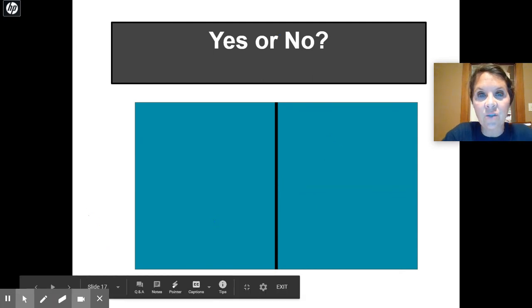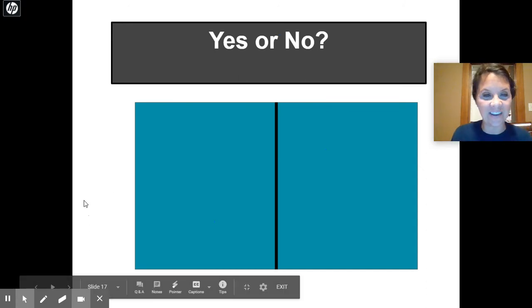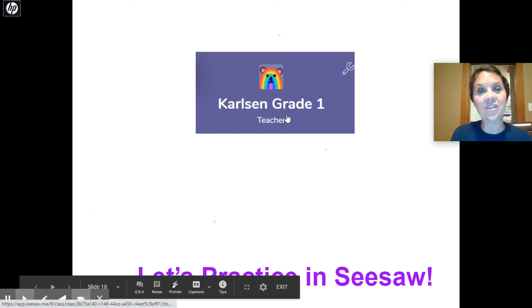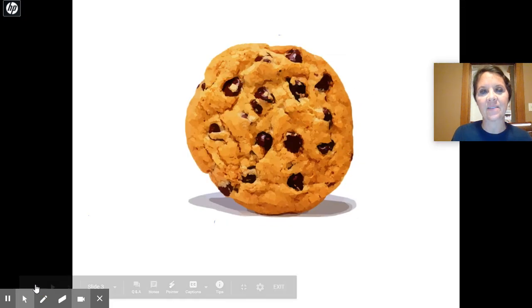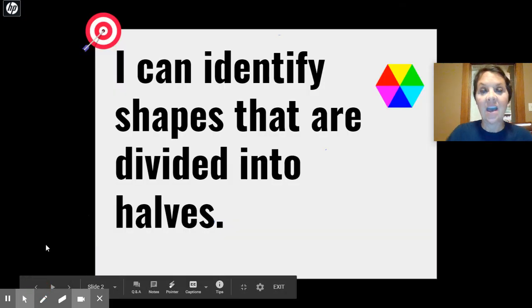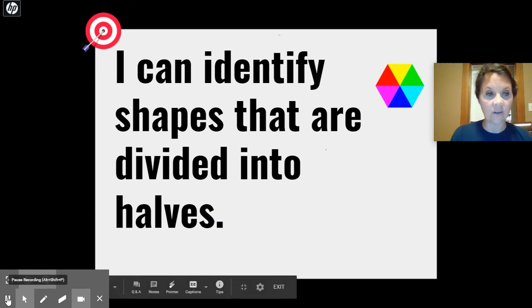Okay, what about this one? Is this one divided equally into halves? Yes or no? Yes, very good. So now you're going to get a chance to practice on your own with our learning target that says, I can identify shapes that are divided into halves. So you're going to be looking at a group of shapes and you're going to have to take the ones out. You're going to actually sort them out into the ones that are divided into halves and the ones that are not. So you're going to be naming those ones that are so let's again go and take a look.